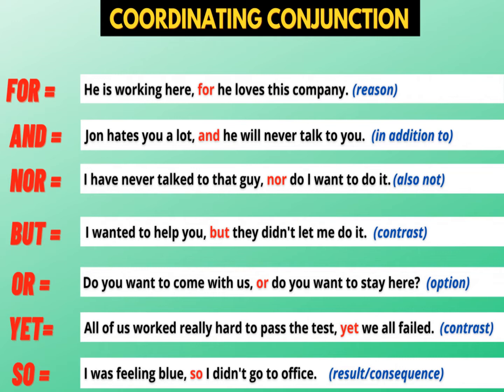'Yet' is used when the result is the opposite of what is expected: 'All of us worked really hard to pass the test, yet we all failed.' Here contrast is present — they worked really hard but the results were not good. If the result is opposite, we use 'yet.' 'So' shows consequence and result: 'I was feeling blue so I did not go to office.' 'So' in Hindi means 'isliye' — so the result is I did not go to office.